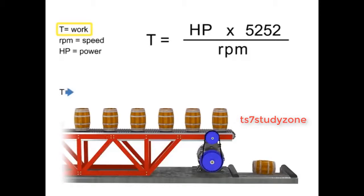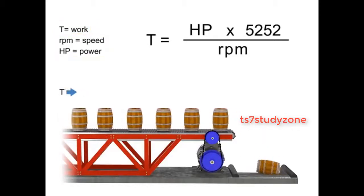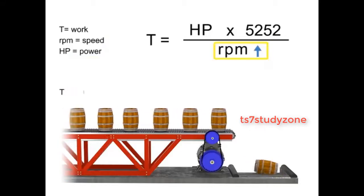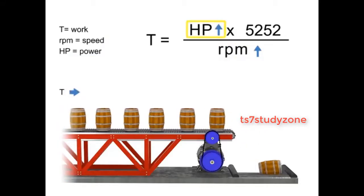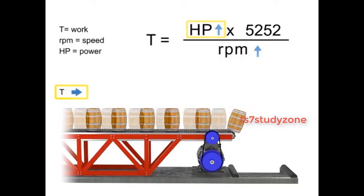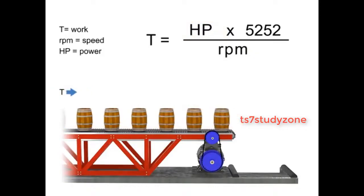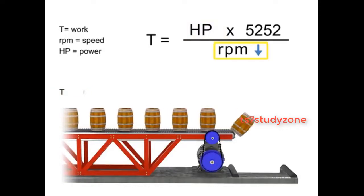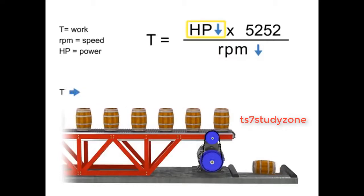If torque remains constant, speed and horsepower are proportional. As the speed, or RPM, increases, horsepower increases to maintain constant torque. If speed decreases, horsepower decreases to maintain constant torque.